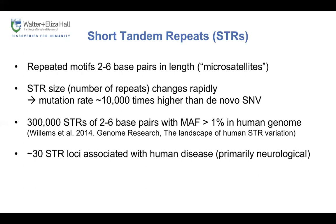There's a large number of STRs in the human genome. For example, Willem Zedow compiled a catalogue of STR size variation using data from the Thousand Genomes Project and they identified around 300,000 STRs that are relatively common in humans. A small number of these STR loci are associated with human disease, primarily neurological, but these are typically very large expansions rather than small changes in size.